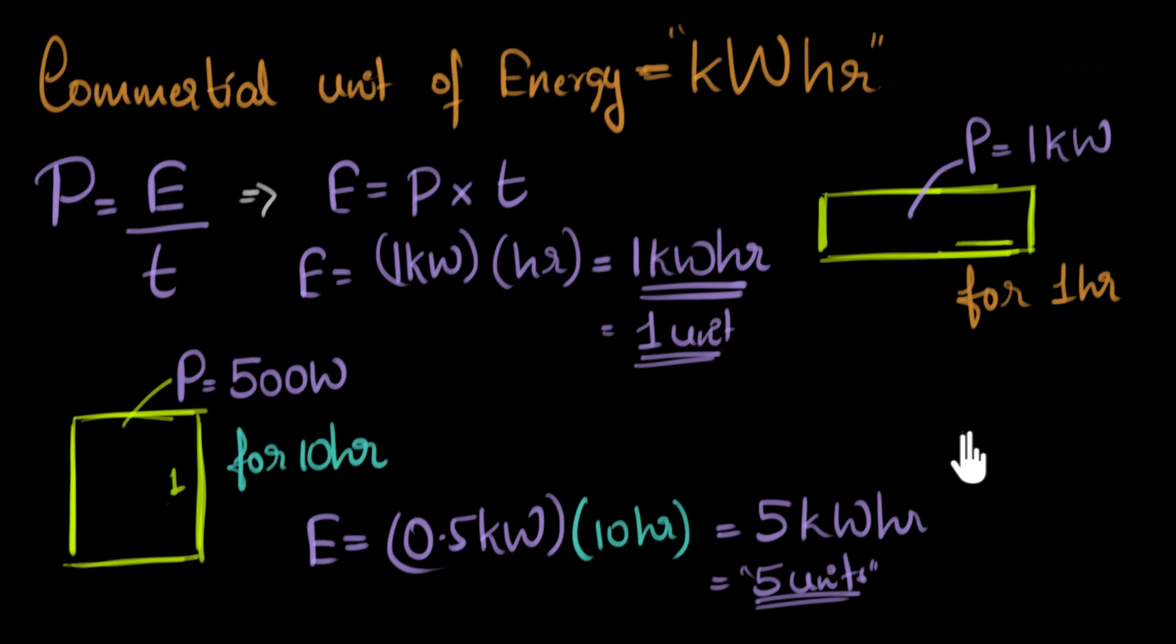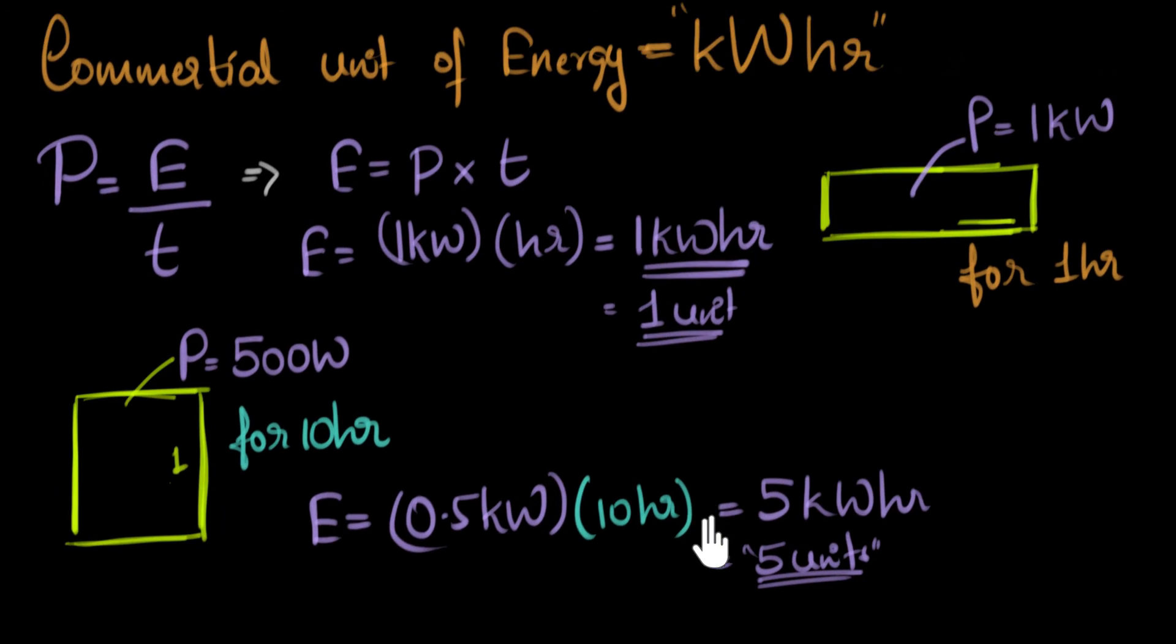So now we might be wondering, well, how big is a kilowatt hour compared to joules? Well, for that, all we need to do is convert this into joules. And to do that, we have to just put the power and the time in standard units. The standard unit of power is watts, and the standard unit of time is seconds. So let's put one kilowatt hour in standard units and see what we get.